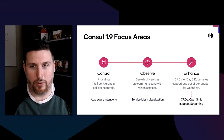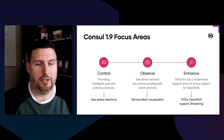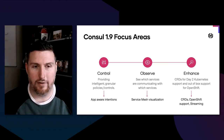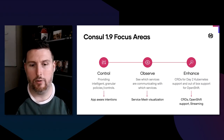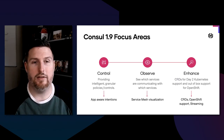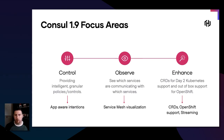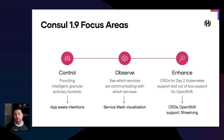We like to pick themes whenever we release a version of Console. In this case, the themes we picked are Control, Observe, and Enhance — larger pillars we use to describe what we've done in this release. From a control perspective, we want to control the way that applications communicate with each other in a more fine-grained way than previously possible. It's often more important to understand how something is communicating as opposed to just whether it's allowed or disallowed, and we do that through application-aware intentions, or Layer 7 intentions.